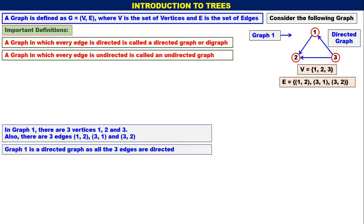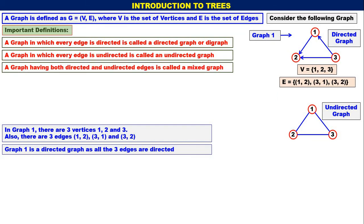A graph in which every edge is undirected is called an undirected graph. All three edges are undirected, therefore it is an undirected graph. A graph having both directed and undirected edges is called a mixed graph. In the example, 1 to 2 is directed, 3 to 2 is directed, whereas the edge between 1 and 3 is undirected — so it is a mixed graph.